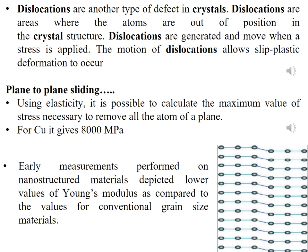Using elasticity theory, it is possible to calculate the maximum stress necessary to move all atoms of a plane. For copper, approximately 8,000 megapascals of stress marks the elastic limit. Early measurements on nanostructure materials compared with conventional grain-size bulk materials show that nanostructure materials have a lower Young's modulus value. Nanomaterials also have fewer defects and fewer dislocations.